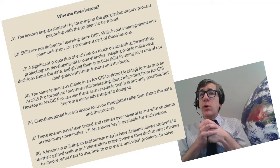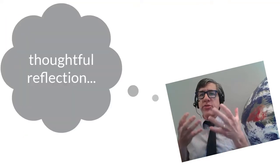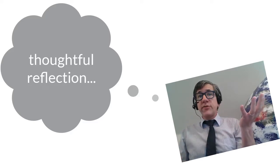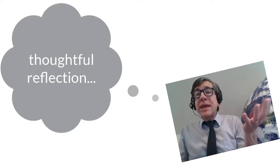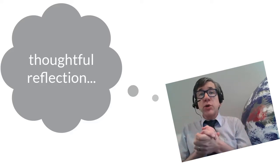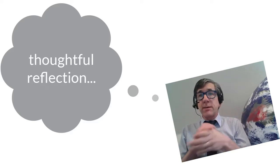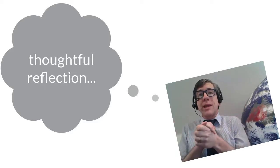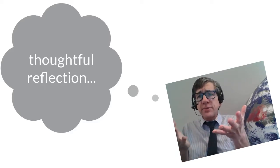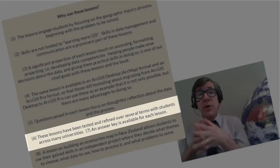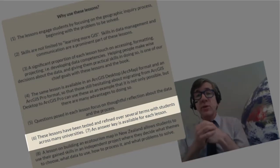Number five, questions posed in each lesson focus on thoughtful reflection about the data and the process, such as: what difference would data at a different scale have on your analysis results, or what was the most significant thing you learned about natural hazards in this lesson, and if you had more time, what data set might you have also wanted to include in your analysis? Where do you think you could obtain such data? Number six, these lessons have been tested, verified, and refined over several terms with students across many different universities.